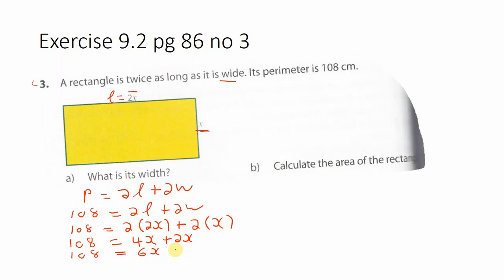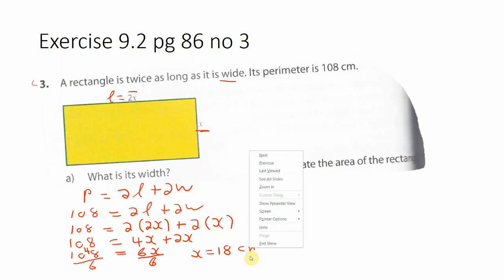Our strategy is to get x on its own, so we divide both sides by 6. The 6s cancel and 108 divided by 6 equals 18. Therefore x equals 18 cm. Remember, units are important — we are working in centimeters. Since the width is x, the width is 18 cm.